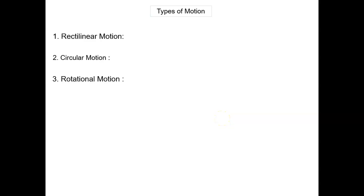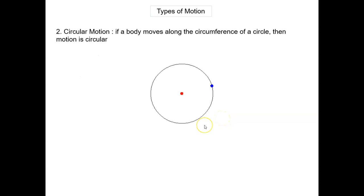Now we will discuss circular motion and rotational motion. If a body moves along the circumference of a circle, then the motion is circular. This blue object is moving along the circumference of the circle, so the motion of the blue object is circular motion.